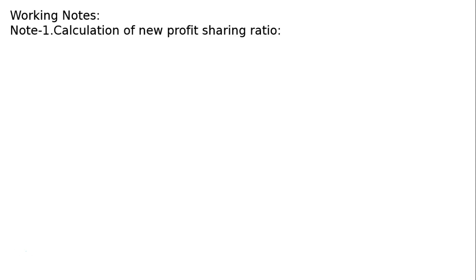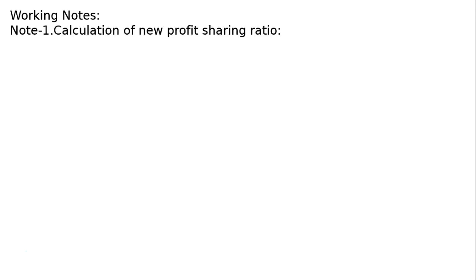C is to pay ₹20,000 as capital for one-fourth share. She also pays ₹5,000 as premium for goodwill. For this, in the working note, old ratio is 3 is to 2 for A and B. So we calculate new ratio and sacrificing ratio.